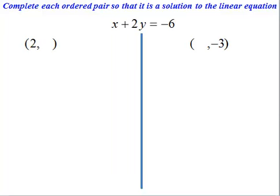In the following example, we're asked to complete each ordered pair so that it is a solution to the linear equation. We're given the linear equation x plus 2y equals negative 6.